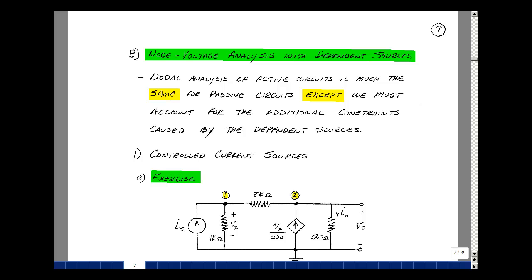The normal analysis inspection techniques that we develop for passive circuits can be applied to active circuits if we can take into account the additional constraints caused by the dependent sources. Maybe the best way to illustrate this is through several examples.